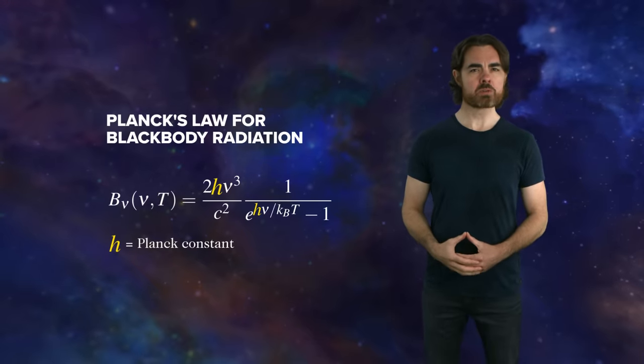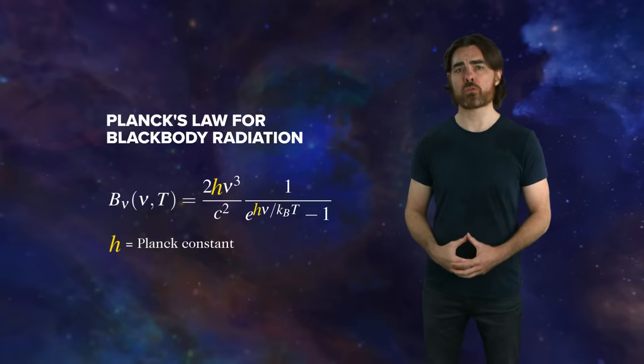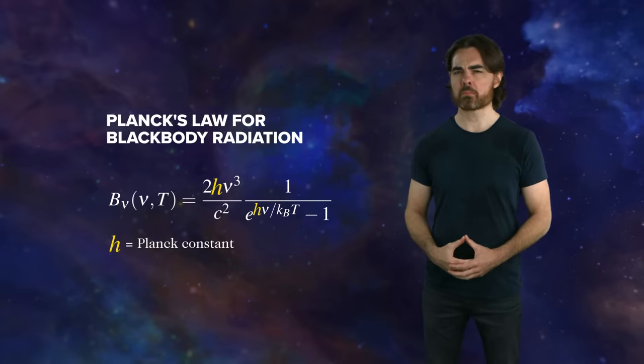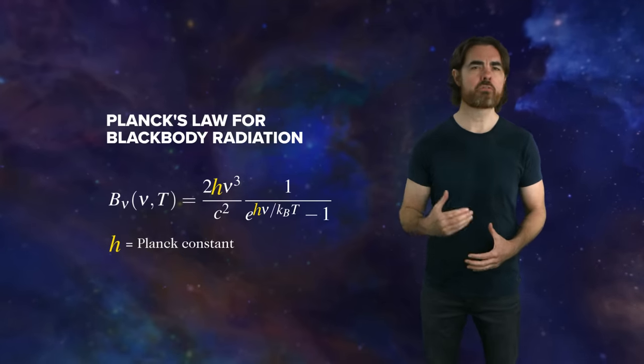Sometimes our mathematical hacks point into strange new aspects of reality. For example, Max Planck used a quantization trick to figure out the spectrum of light emitted by hot objects. The quantization part of his math trick was meant to disappear in the final form of the equation. But it remained. It proved fundamental.